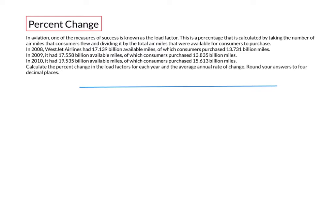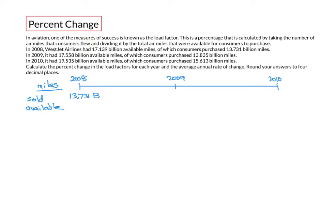Let's set up a timeline to visualize the problem from 2008 to 2009 to 2010. The data we're given are available air miles and purchased air miles. In 2008, there were 13.731 billion air miles sold and 17.139 billion available. In 2009, there were 13.835 billion air miles sold and 17.558 billion available. And I've added in the air mile data for 2010.